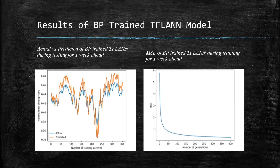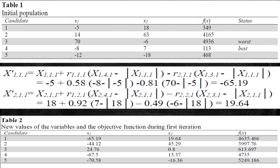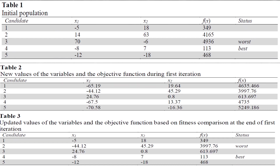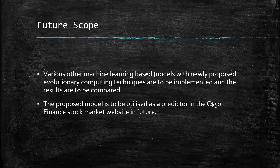Finally, I can conclude that the Jaya trained T-FLAN model is superior to all. The future scope involves implementing various other machine learning based models with newly proposed evolutionary computing techniques, comparing the results, and utilizing the proposed model as a predictor in the CS50 Finance stock market website in future.